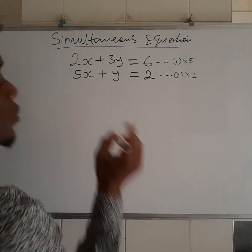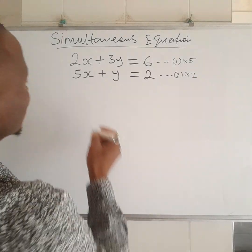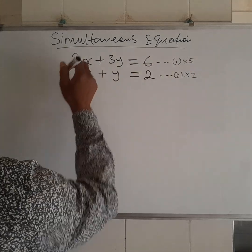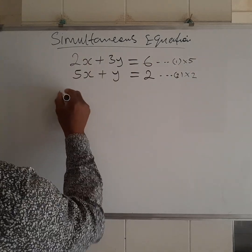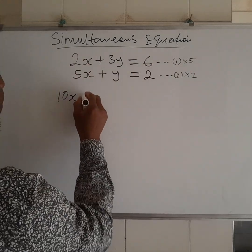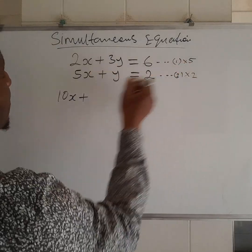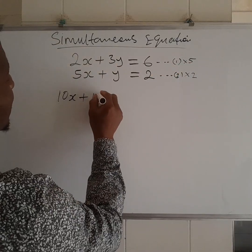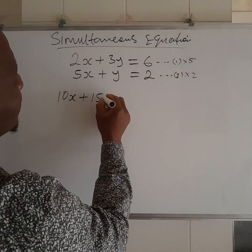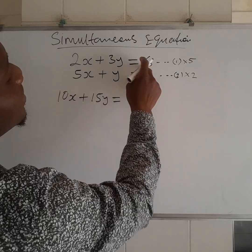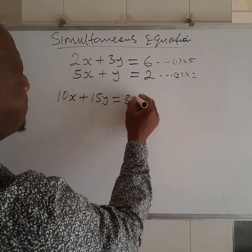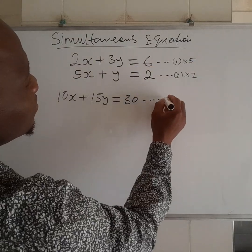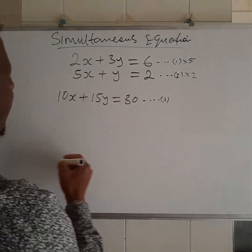Here, we have our new equation to be 5 times 2x will give you 10x, plus 3y times 5, we have 15y. It is equal to 6 times 5, you have 30. This becomes your new equation 3.